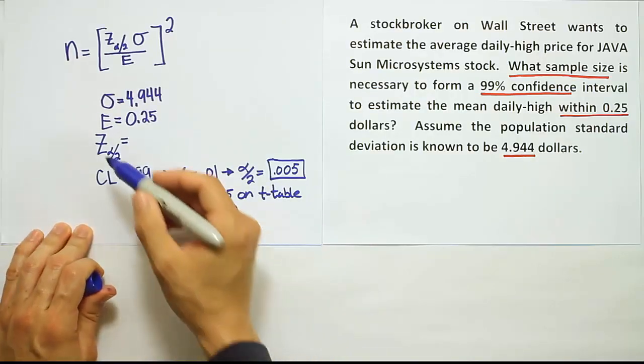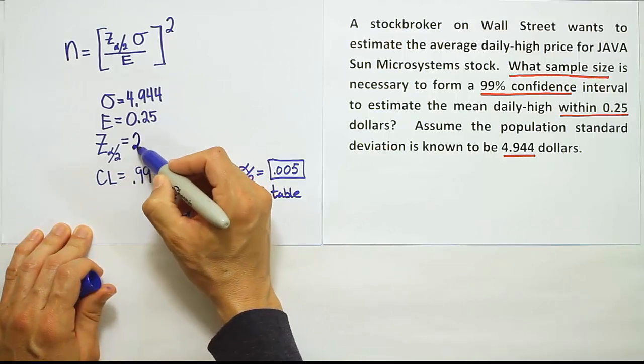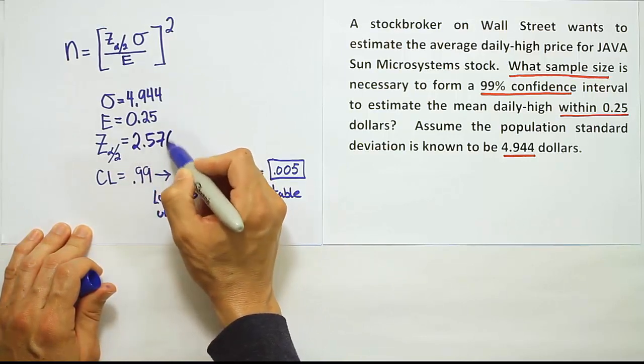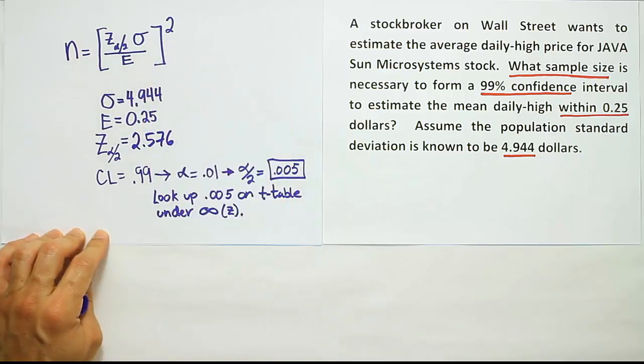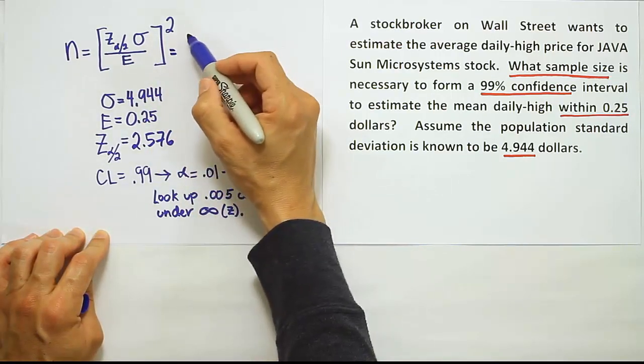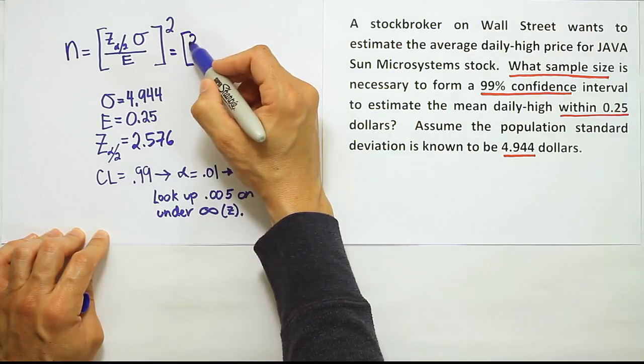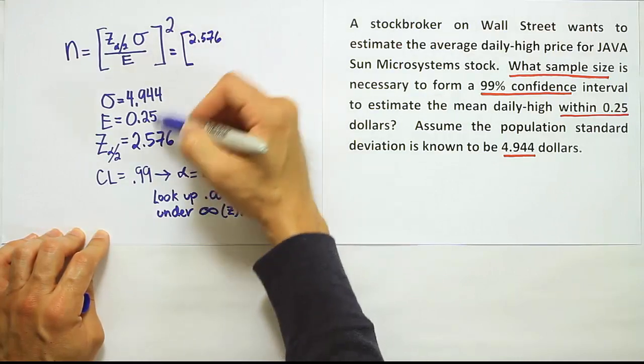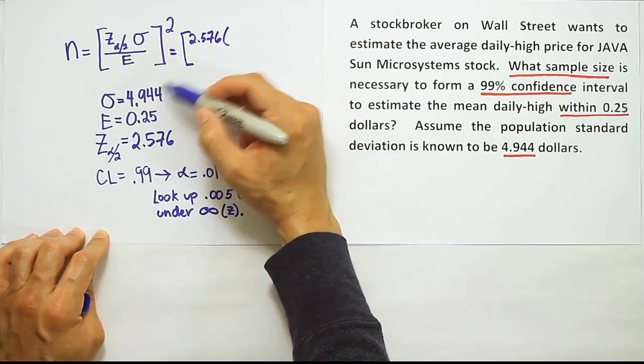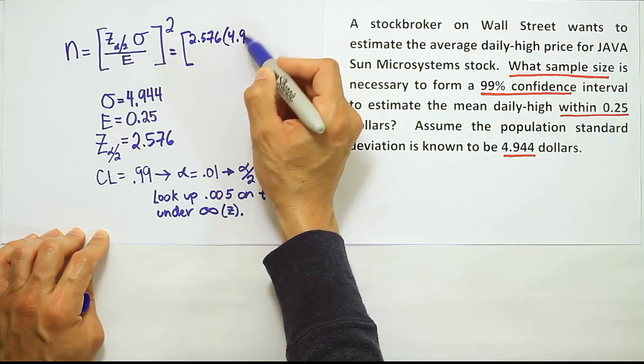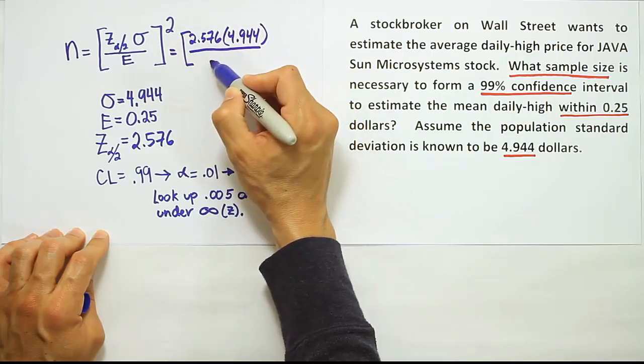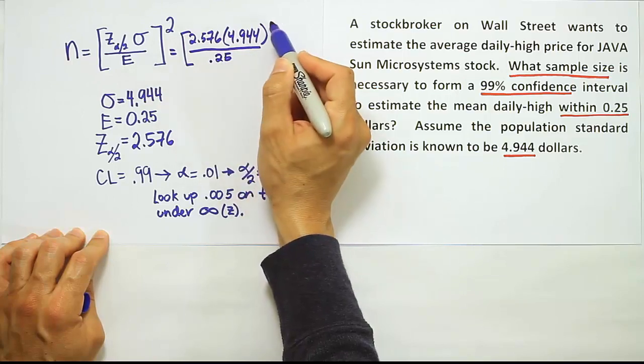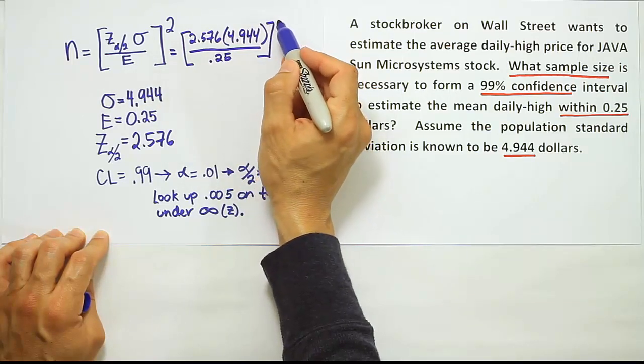Now we've found the z-alpha divided by 2 value to be 2.576. Our next step is to plug these values into our formula and calculate our sample size. First thing I'll put in is my 2.576, that's my critical z-value, then times my standard deviation, 4.944, and then from there, I will divide my margin of error into both of those numbers. Then finally, square the result.